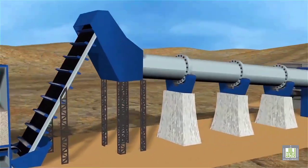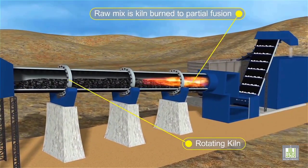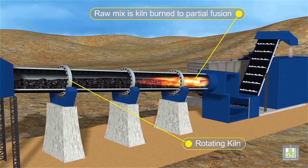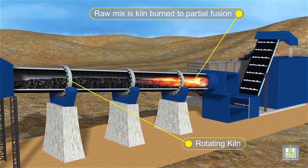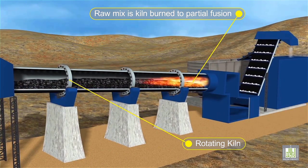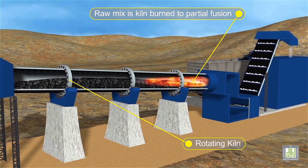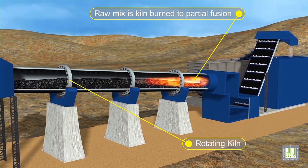This powder is fed into the kiln, where the heat promotes the necessary chemical reactions. The kiln exhaust gases are the main source of heat used to dry the raw materials.